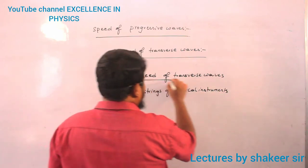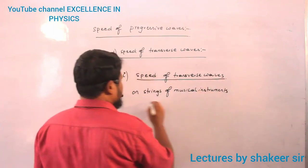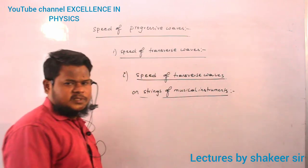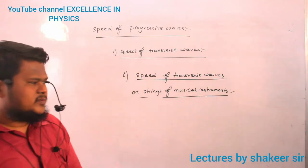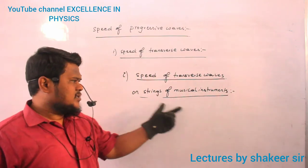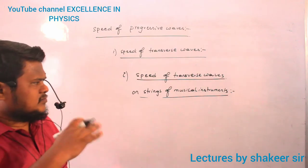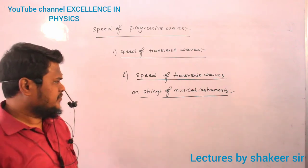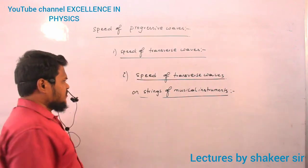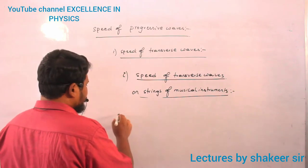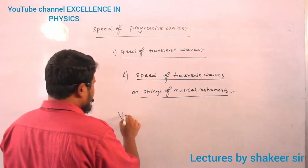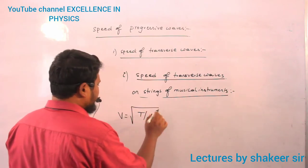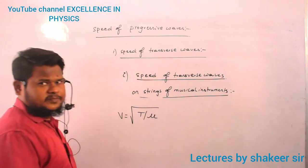If we pluck the strings of musical instruments, they will oscillate and vibrate. Stationary waves are produced on the string surfaces. The speed of transverse waves is given by v equals the square root of T divided by μ.